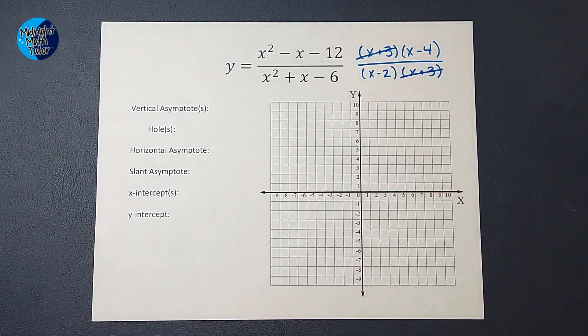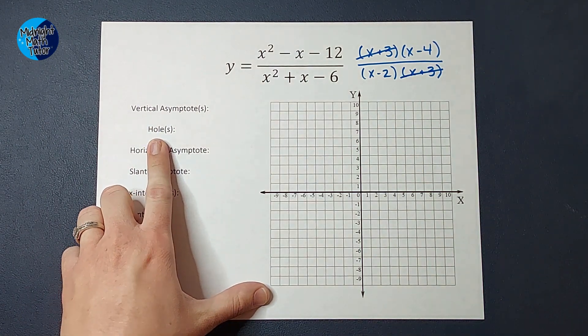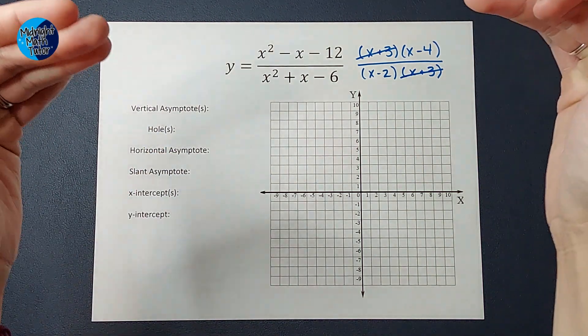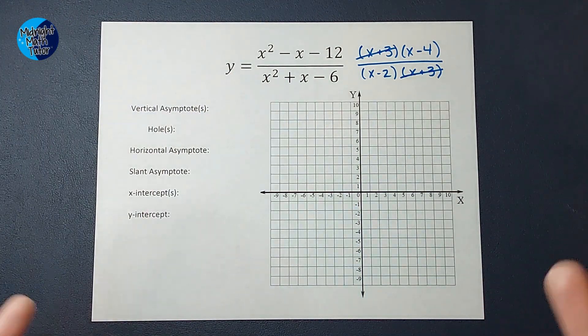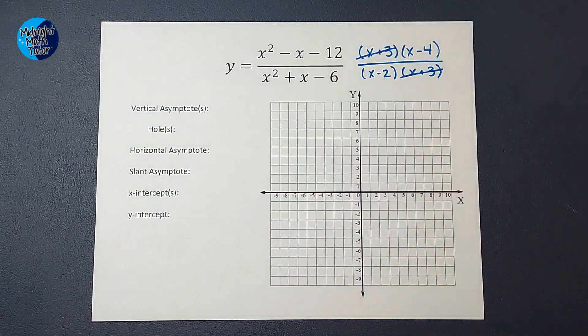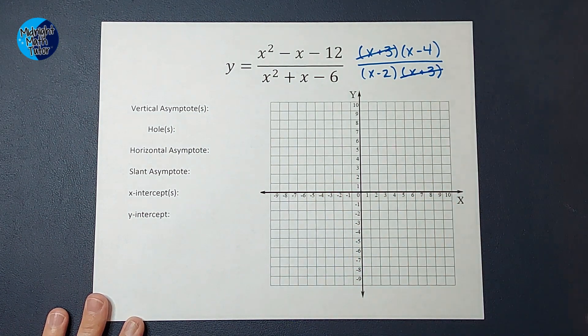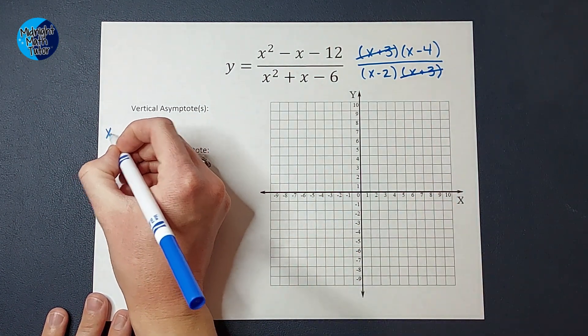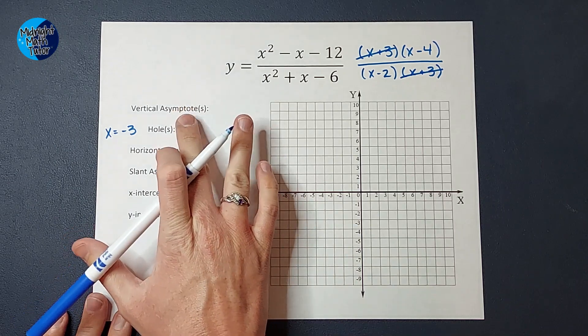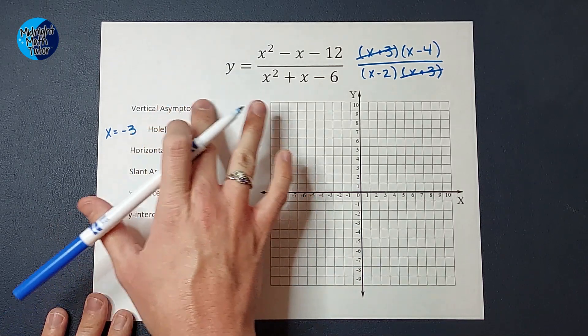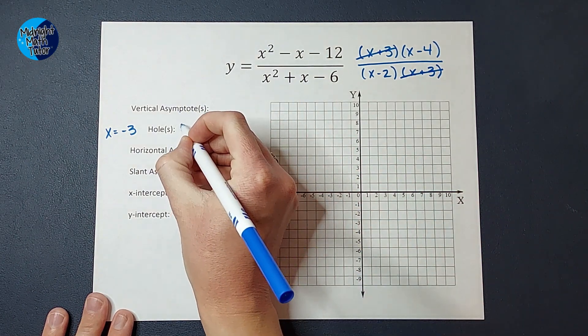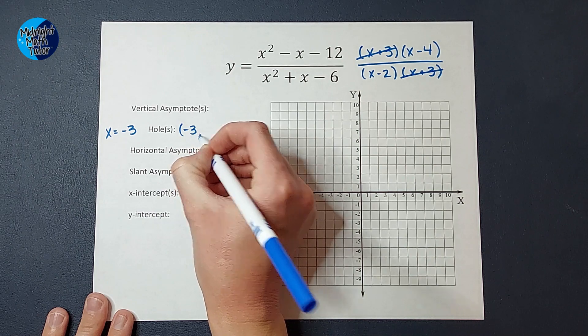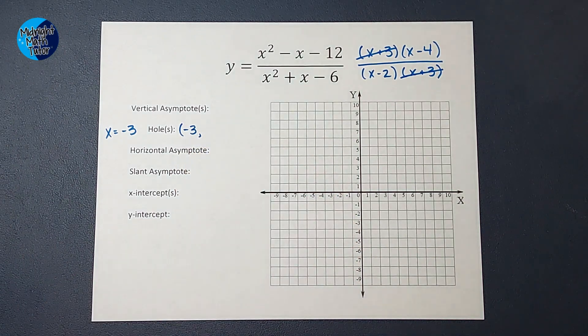But how does that affect my graph, right? Well, this is where holes come in. So when you have something that cancels on the top and the bottom, you have on your graph what's called a hole. It's literally a hole in your graph. So to figure out exactly where it is, if I were to set x plus 3 equal to 0, I would get x equals negative 3, right? But it's not an asymptote like these guys are that we're going to figure out in a minute. It's just a point, right? So it's going to be an ordered pair where x is negative 3. And I don't know the y yet, but I can figure it out.